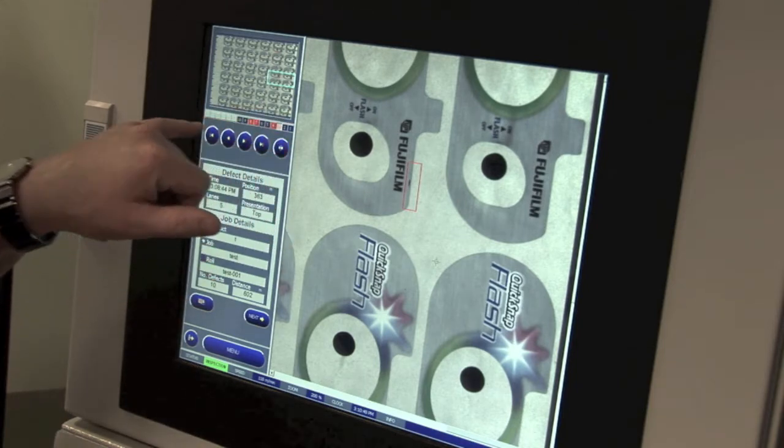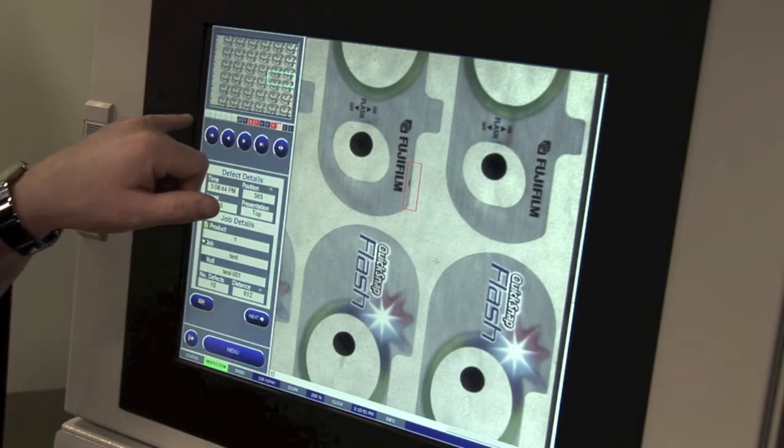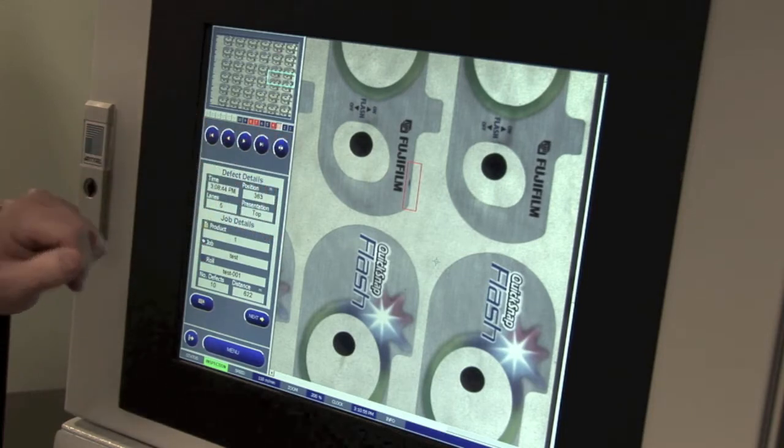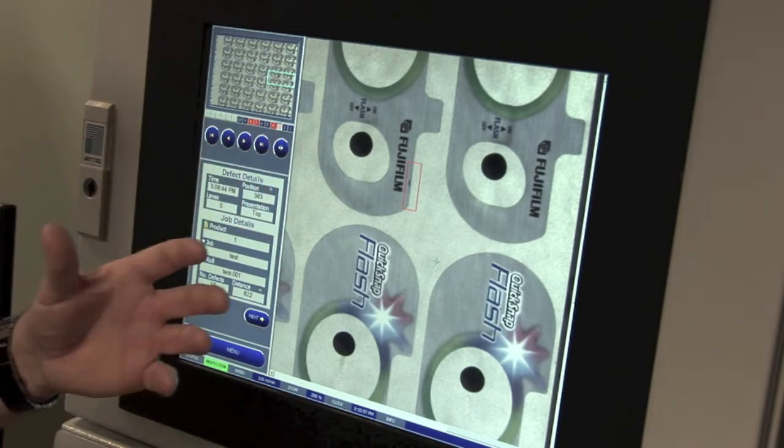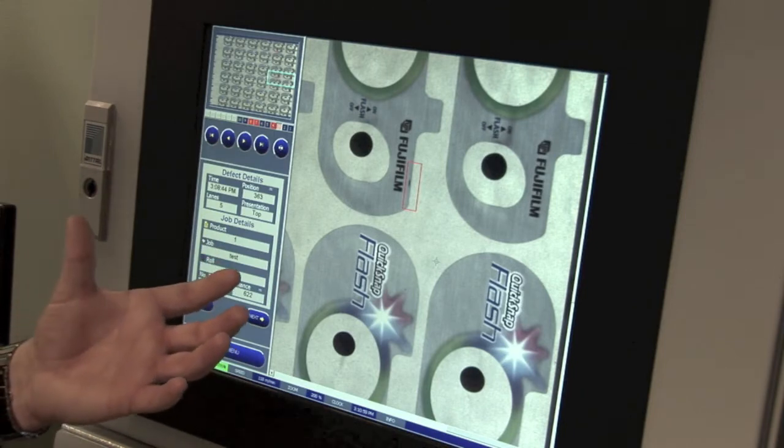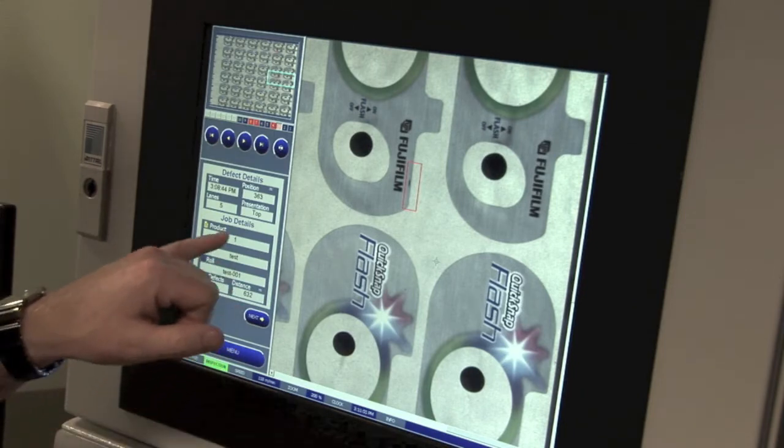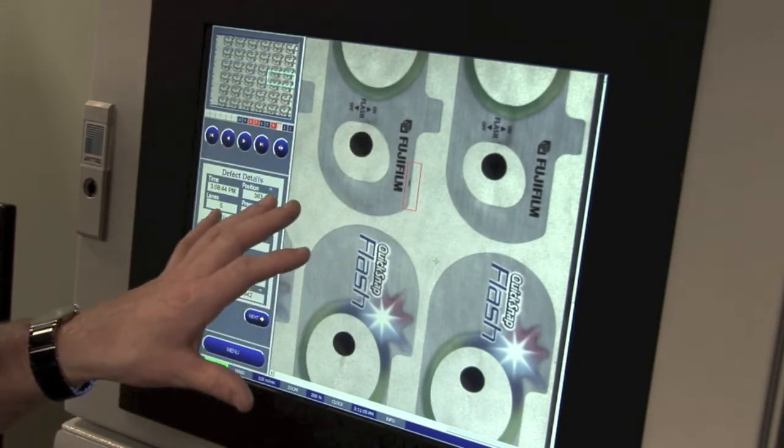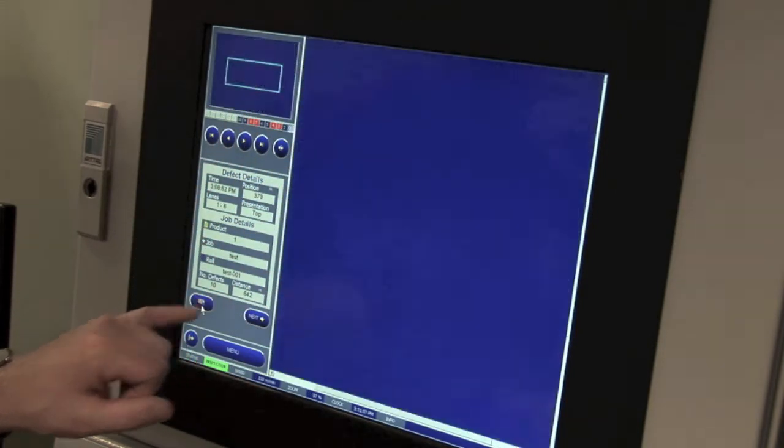We also have a defect gallery, which will maintain images of the last 16 defective repeats. So that gives the operator a frame of reference as to what's happening because one of the key indicators for defects occurring is the image on screen.